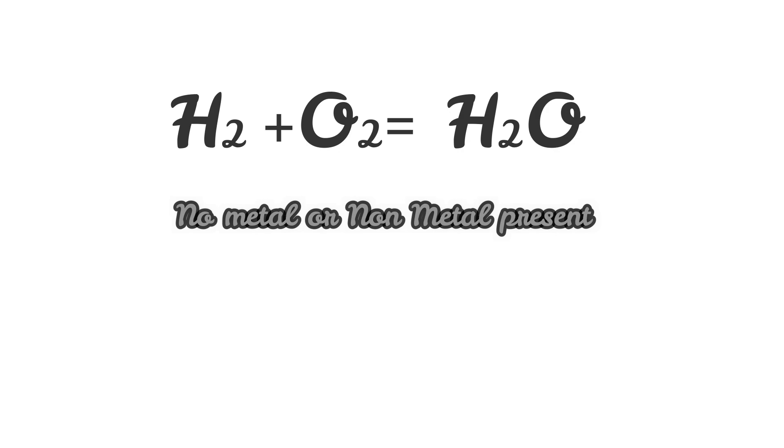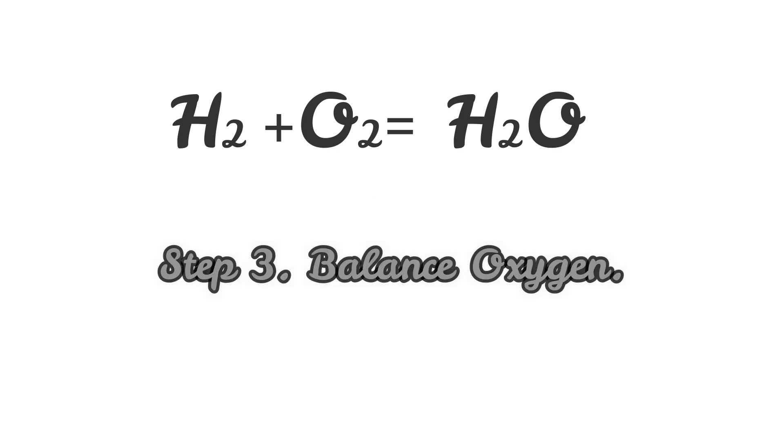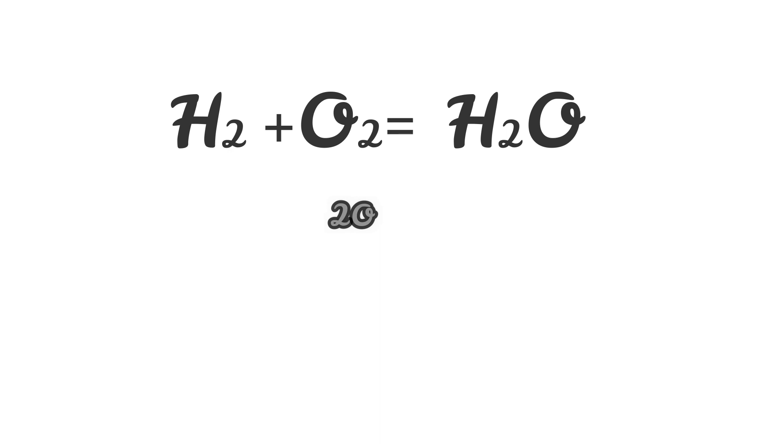Now let's balance some equations, shall we? Let's start with the simplest one. Our rule says follow these steps, but we see no metal or non-metal here, so we will start from step three. Reactants have two oxygen atoms while product has only one, so double the number of molecules by putting two in front of H2O molecule. This will make the number of oxygens in product equal.